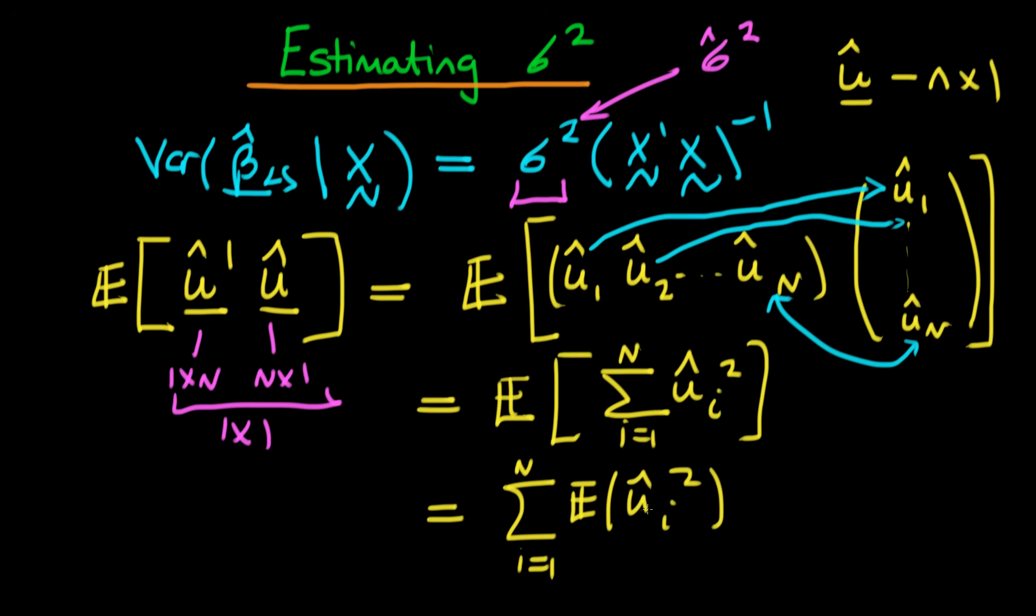And naively you might think that since each of these expectations should contribute sigma squared, that we'll just get here n sigma squared, which would mean that a good estimator for the parameter sigma squared would be to say,